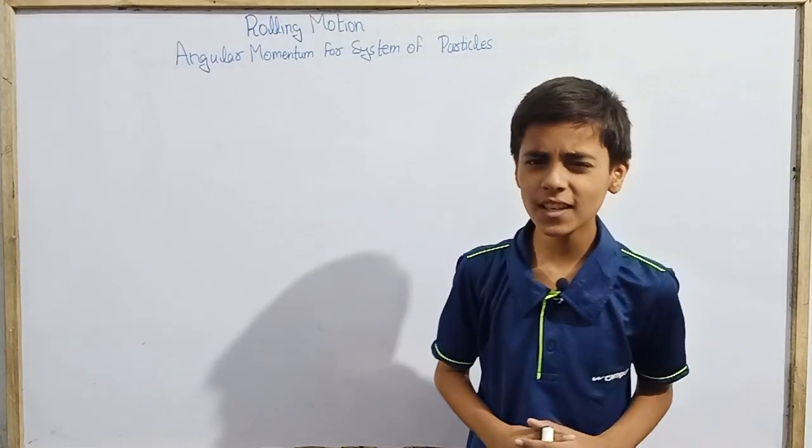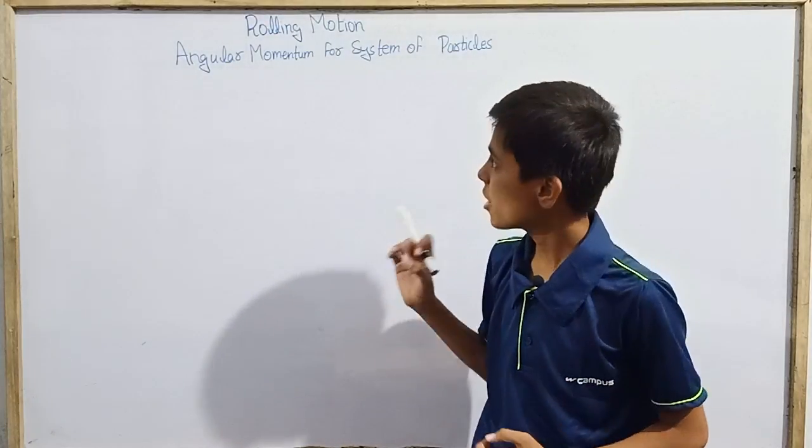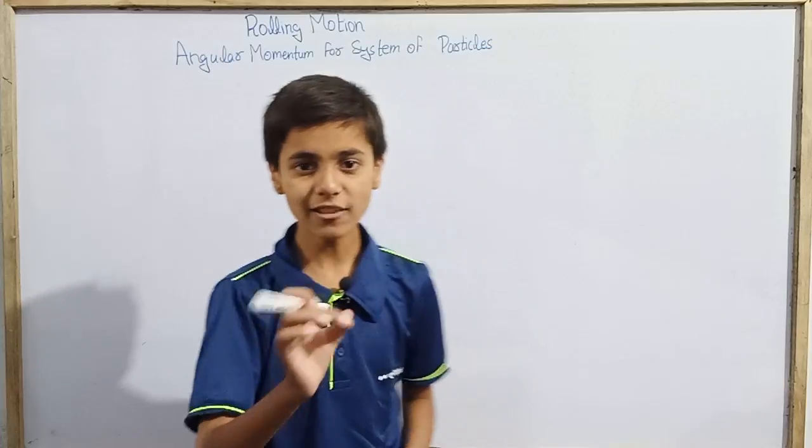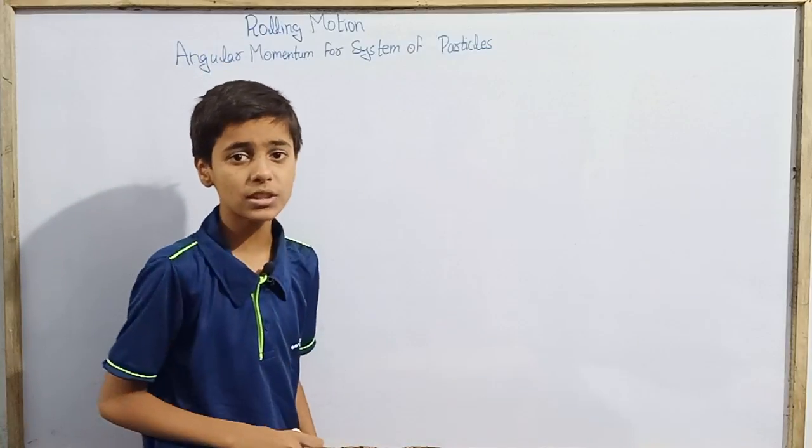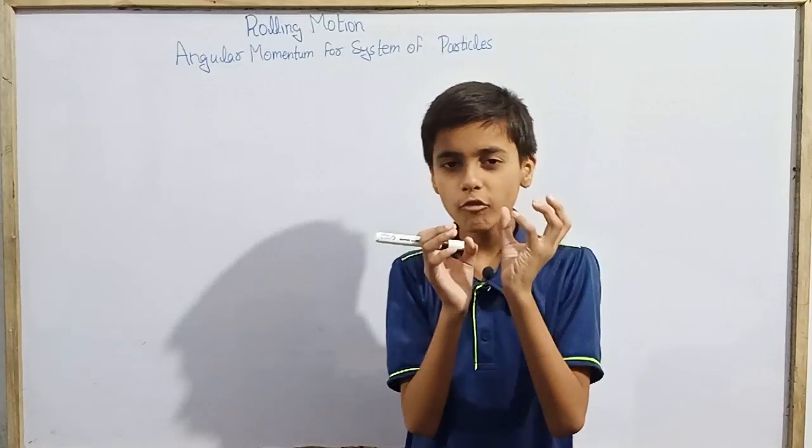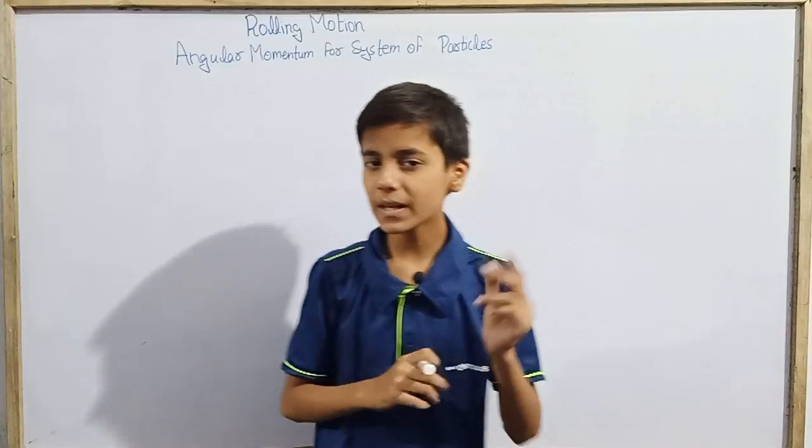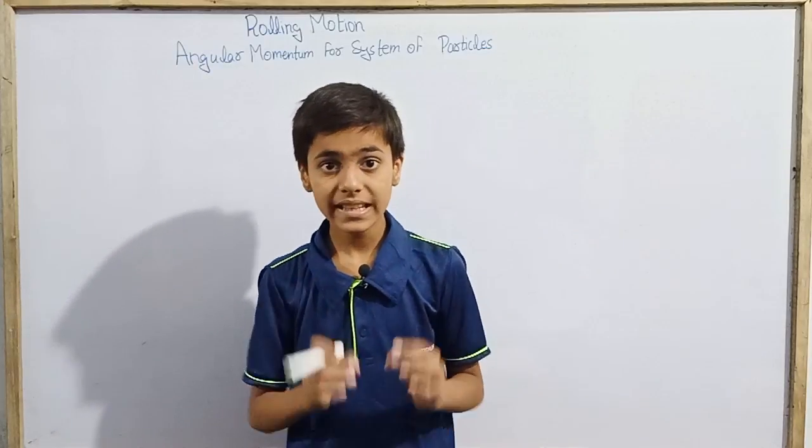Hello everyone and we are back to SK Vanakets with rolling motion. Today we will do angular momentum for system of particles. We have seen angular momentum for a particular particle, but now we will see angular momentum for an entire rigid body.